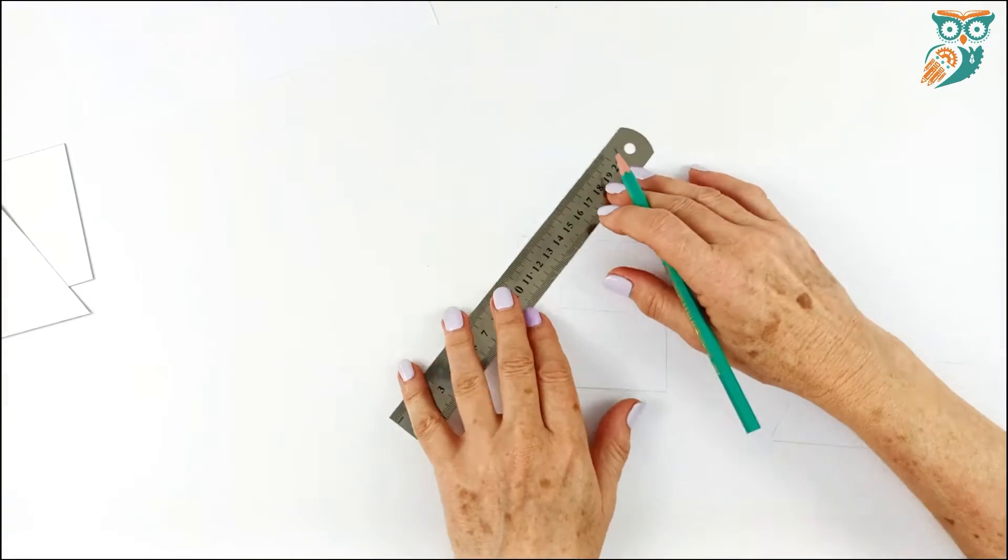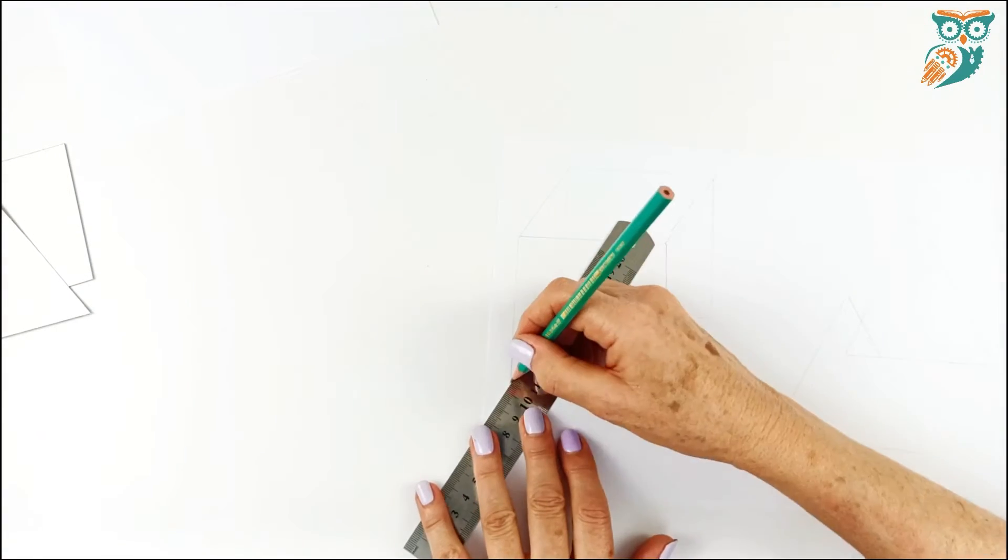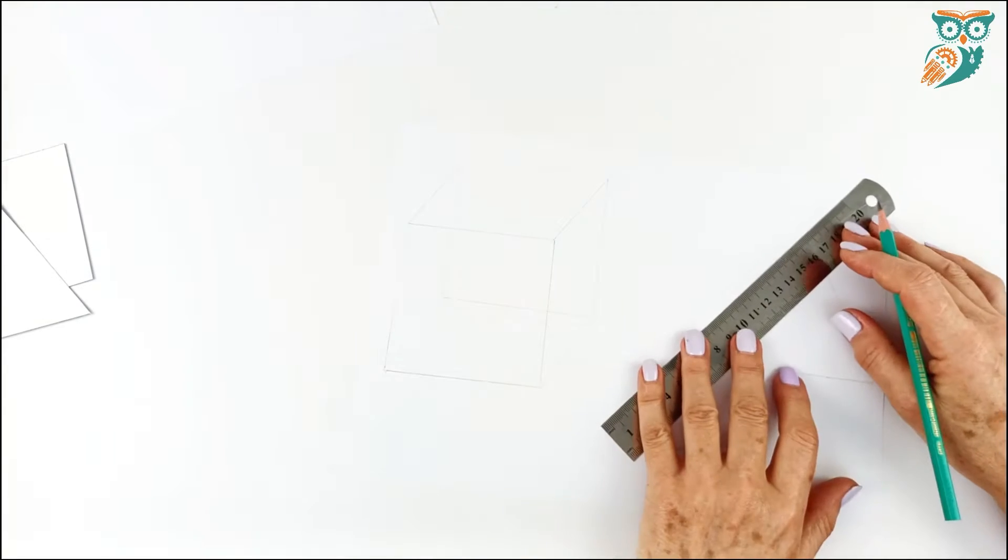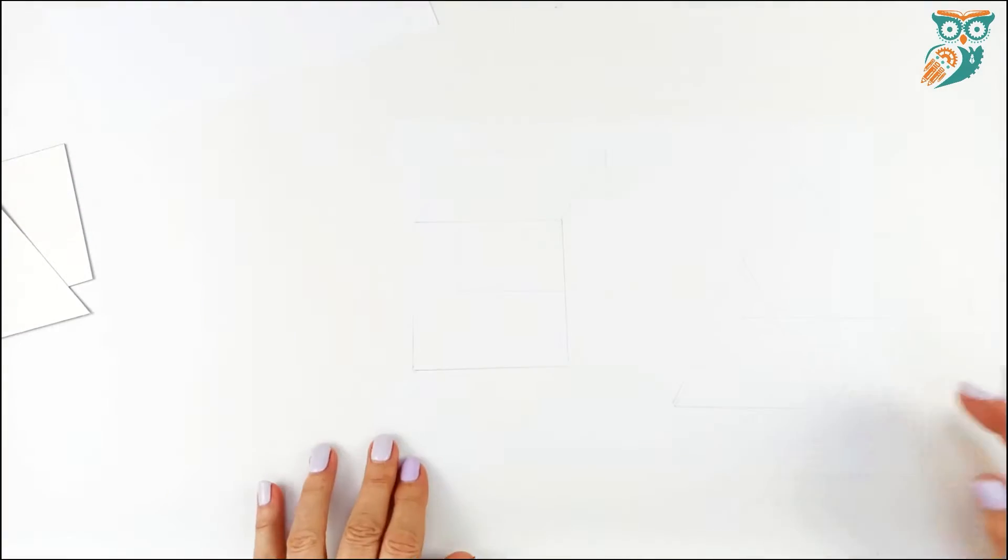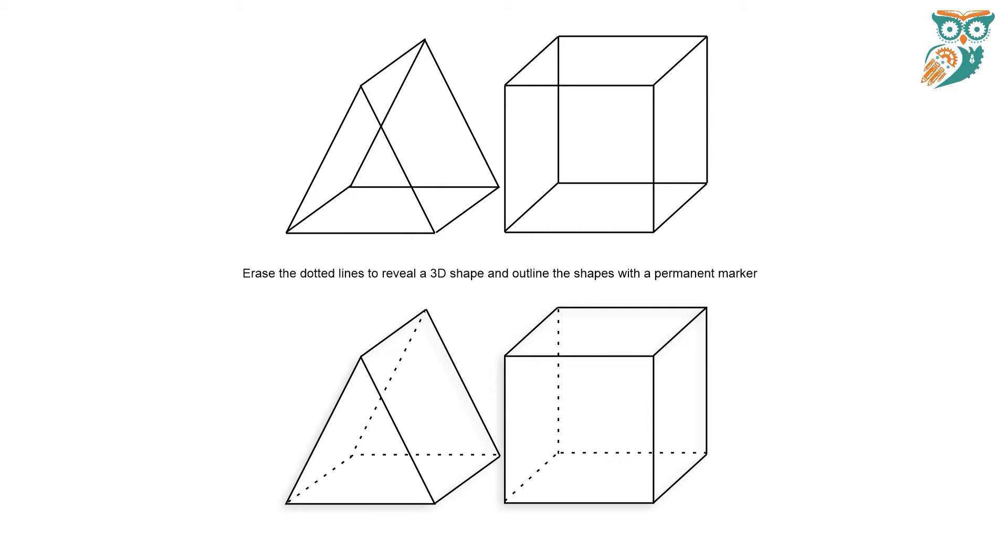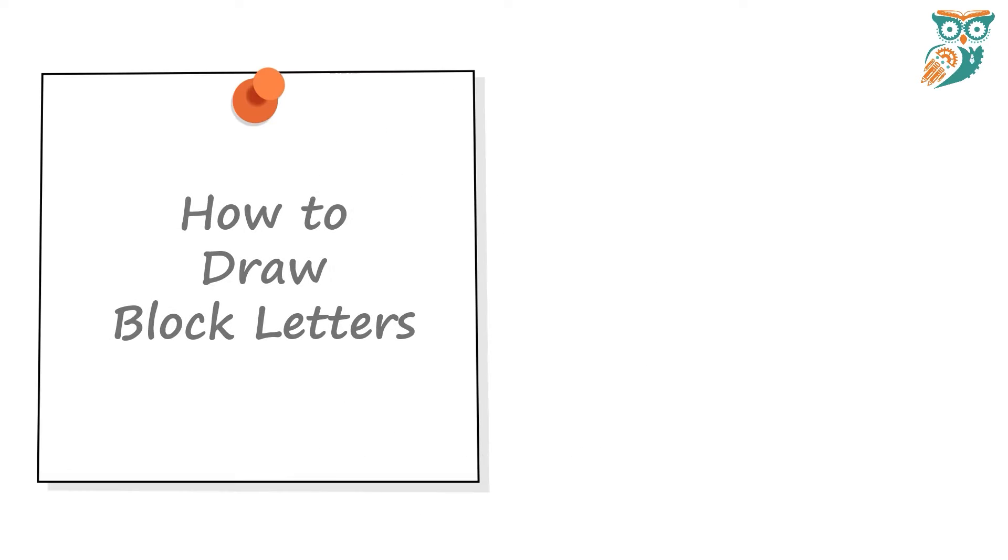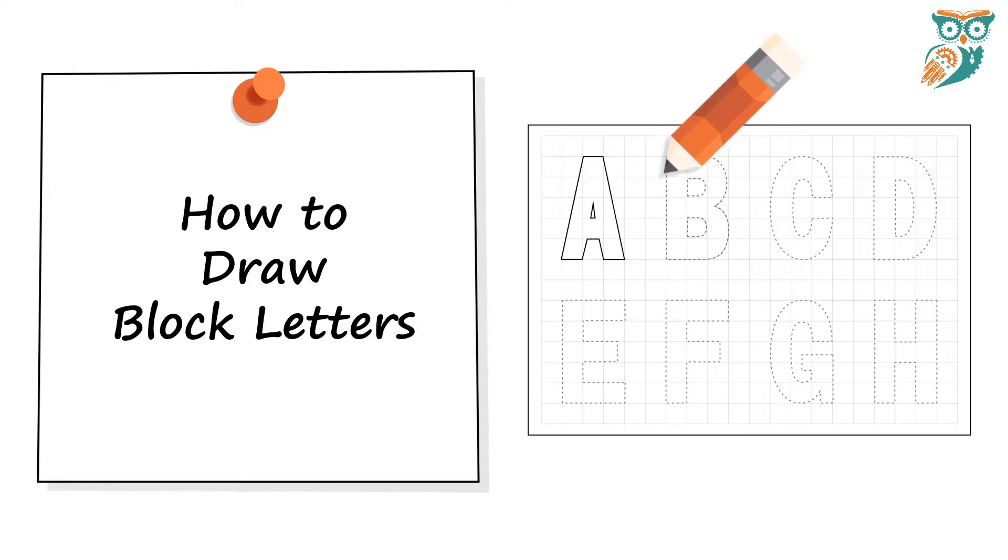And now we're gonna use a ruler and connect to the corners and when we do this it changes the shape from 2D to 3D in the way it is perceived by our eyes. And then you can go through here and we're just showing how you can delete those lines in the middle to make it more clear.